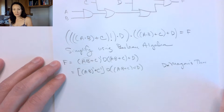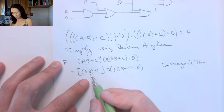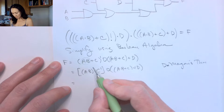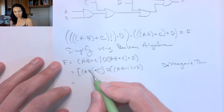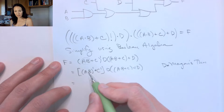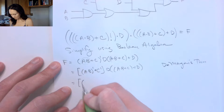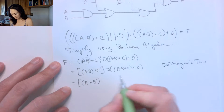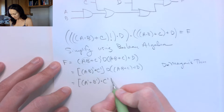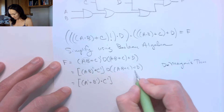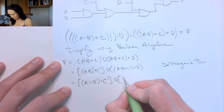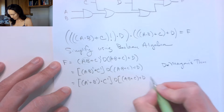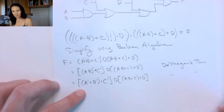Now I'd like to apply DeMorgan's to the AB term. If I apply DeMorgan's, I distribute this complement into both terms and change this AND to an OR. So this becomes Ā OR B̄, and that is still ANDed with C̄. Then I still have the rest: D, and A, B, or C, OR'd with D. This is DeMorgan's theorem again.